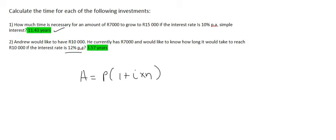So, we know that Andrew would like to have 10,000 Rand. So, that's going to be the final amount. The starting amount is 7,000. The interest rate is 12%, or 0.12, times by N.